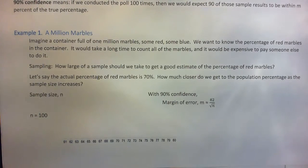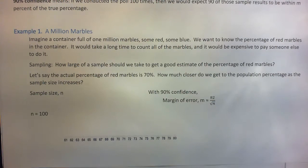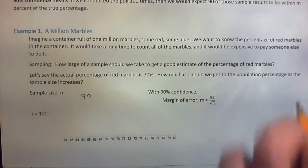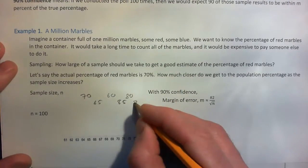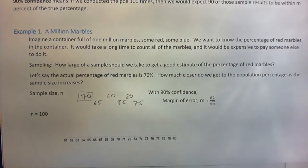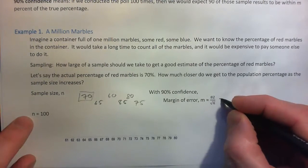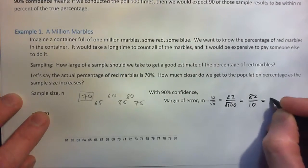What would you expect the colors to be if you pulled 100 random marbles? You might expect 70 to be red, but it's hard to get exactly that. We know 70% are red — not supposed to know that — but if you pull 100 marbles from this container you'd expect about 70 of them to be red, especially if they're mixed up properly. It could be 60, 80, 65, 75, or whatever. You wouldn't expect to get exactly 70, but around 70. So what do we mean by 'around 70'? We'll use this formula with sample size 100: 82 over the square root of 100.